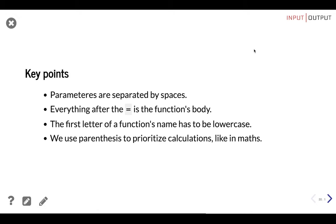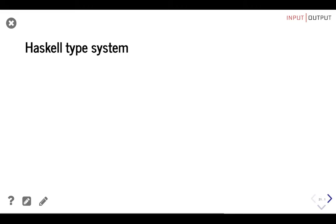The key points are: parameters are separated by spaces both when defining and when using the function; everything after the equal sign is the function's body — just a single expression; the first letter of a function's name has to be lowercase; and we use parentheses to prioritize calculations, just like in maths.